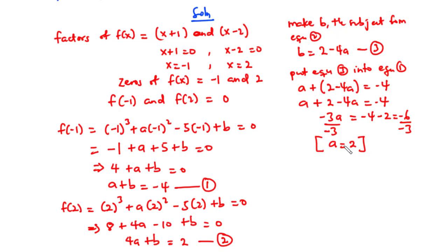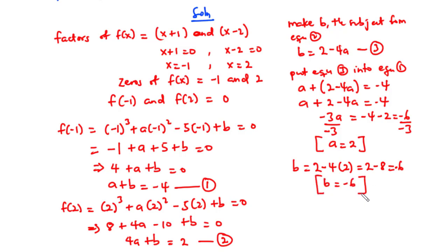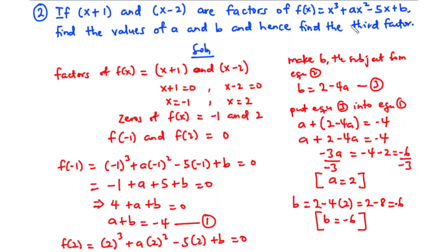Substituting a = 2 into equation 3: b = 2 - 4(2) = 2 - 8 = -6. So a = 2 and b = -6. Substituting these back into f(x): f(x) = x³ + 2x² - 5x - 6.